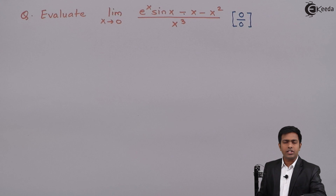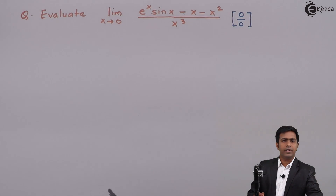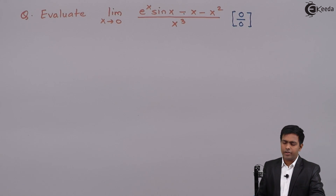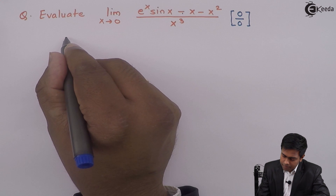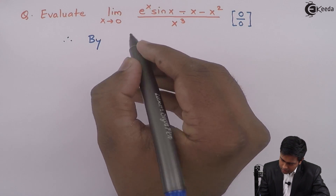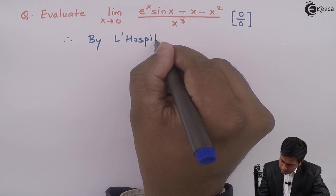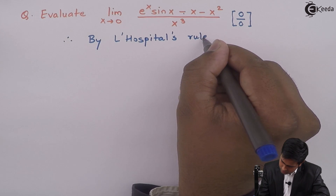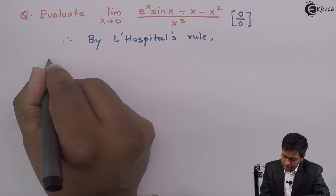In such cases, we apply L'Hôpital's rule, where we find the derivative of the numerator as well as the derivative of the denominator and try to make it a finite limit. So therefore, by L'Hôpital's rule, this limit will become L equal to...